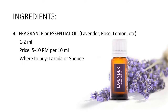Four: fragrance. You can use any kind of fragrance or essential oil such as lavender, rose, or lemon. You can buy these from online shops such as Lazada or Shopee and it will cost you around 5 to 10 ringgit per 10 ml. You can also use orange fruit peel alternatively. In this video, we use about 1 to 2 ml of fragrance, depending on preference.